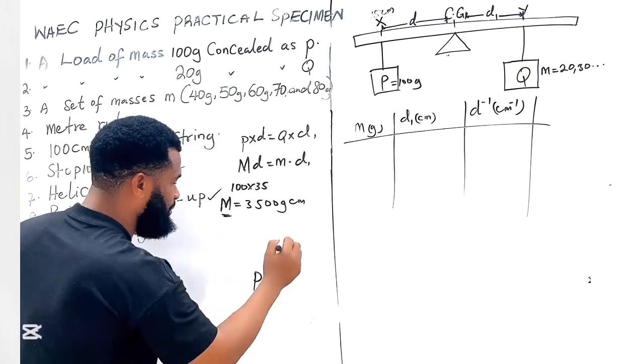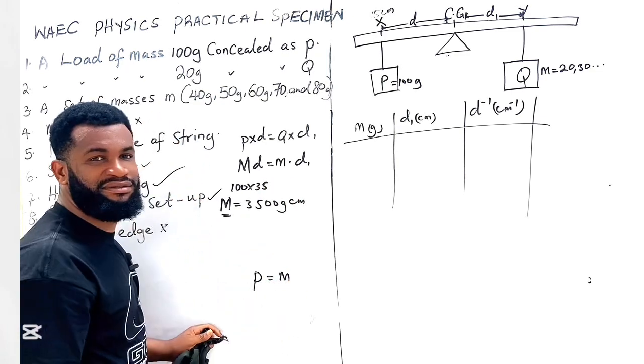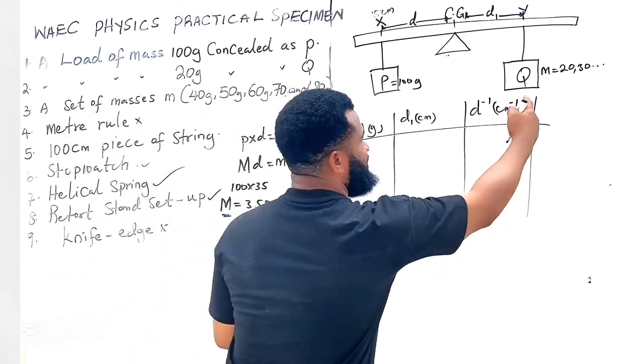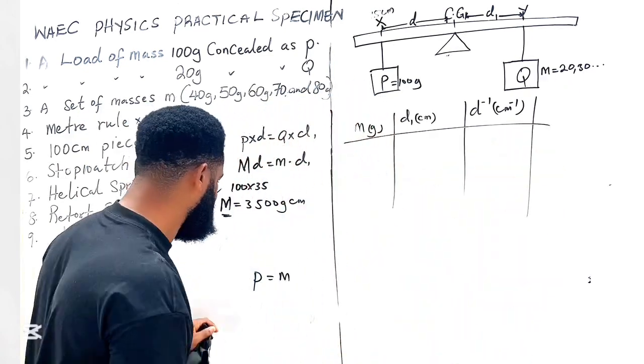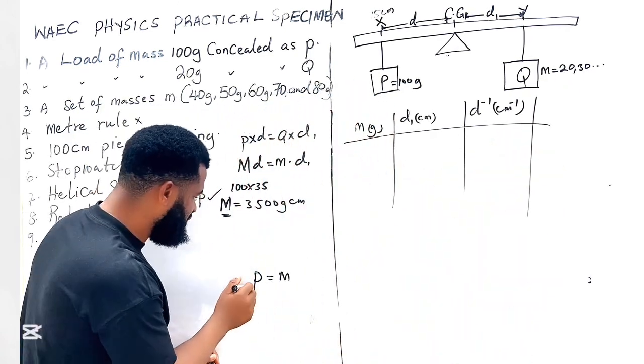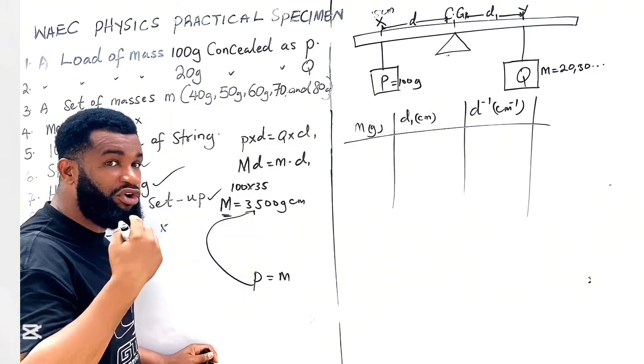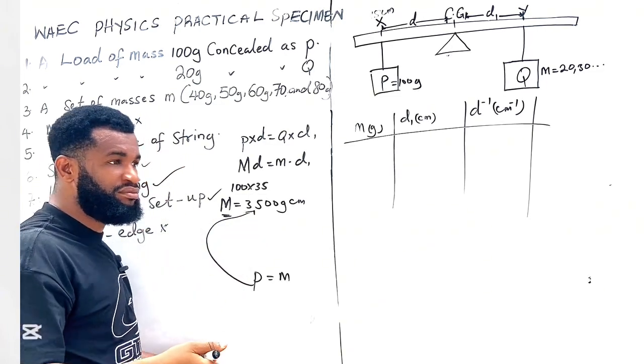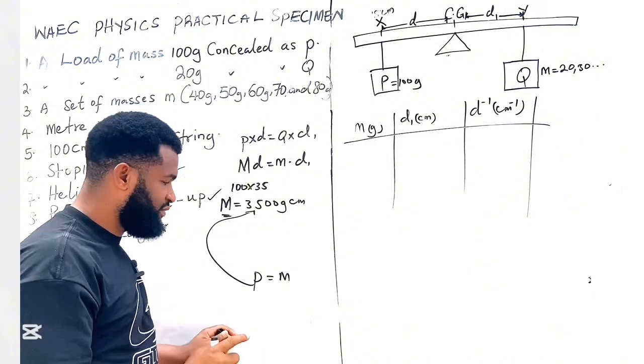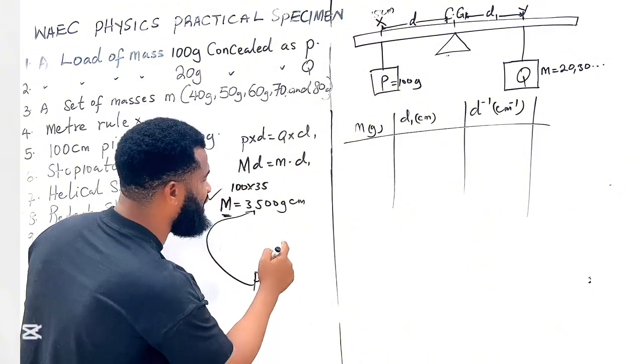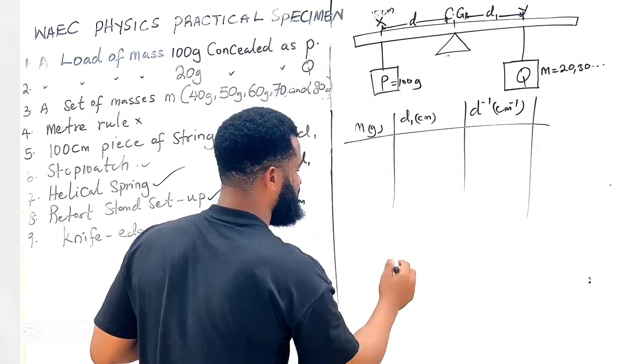So they will not say that moment, capital M, I'm using capital M for moment. Let me use P for moment. Moment, I'm going to say that P is equal to m, which is the mass. But this P, which is moment, is equal to this value. They already know, but they want you to confirm. Now look at this: d multiplied by d inverse, because you are plotting a graph of